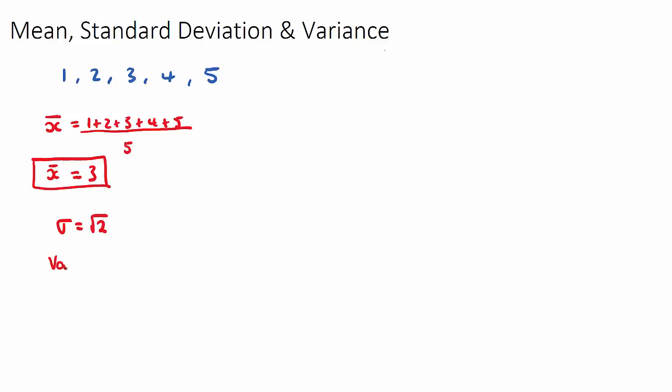And what our variance will be, the variance of a data set is just the standard deviation squared. So it's just going to be root 2 squared, which is going to be 2. So that would be for our original data set. We would have a mean of 3, a standard deviation of root 2, and the variance is therefore just root 2 squared, which will be 2.